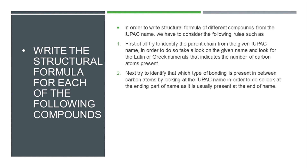We look at the IUPAC name — usually the last three alphabets of the name indicate the nature of bonding present in that molecule. Usually it is the last three alphabets, but in some special cases it can be in the middle of the name. Generally, the last three alphabets of the IUPAC name tell us which type of bonding is present. This is the interpretation of the parent chain — how to identify it, how to identify the number of carbon atoms, and how to identify the bonding within it.